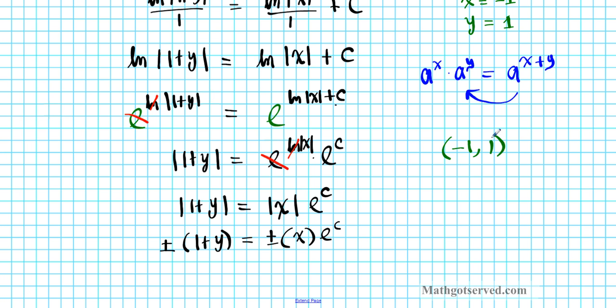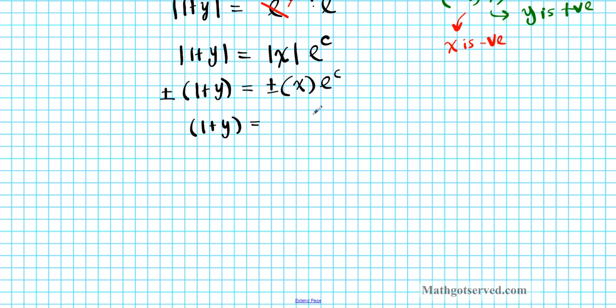The initial condition was (-1, 1). What do you notice about y? Y is positive. So what does that mean here? We're going to take the positive sign. On the left side, we're going to have positive (1 + y). How about x? X is negative. So we're going to use a negative sign here. So we're going to have -x times e^c. This is also important because it tells us the domain. X is less than 0.